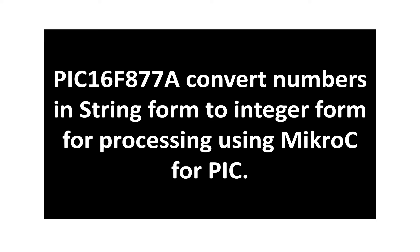The text we receive — we cannot process those numbers directly. Like, you receive a number and then you need to process it. First you have to convert it into an integer to perform mathematical operations. So for that purpose, we need to use some special commands to convert a text in the form of ASCII or string to integer form, so we can do arithmetic on it.